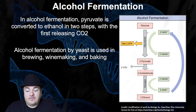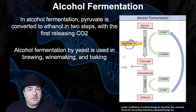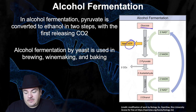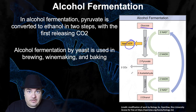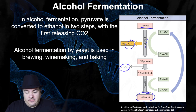For alcohol fermentation, the input — what you start with — is glucose. The outputs — what you get out — are two ATP, which is the only energy you get out and is made during glycolysis, plus the waste products. The waste products are two molecules of carbon dioxide and two molecules of ethanol.